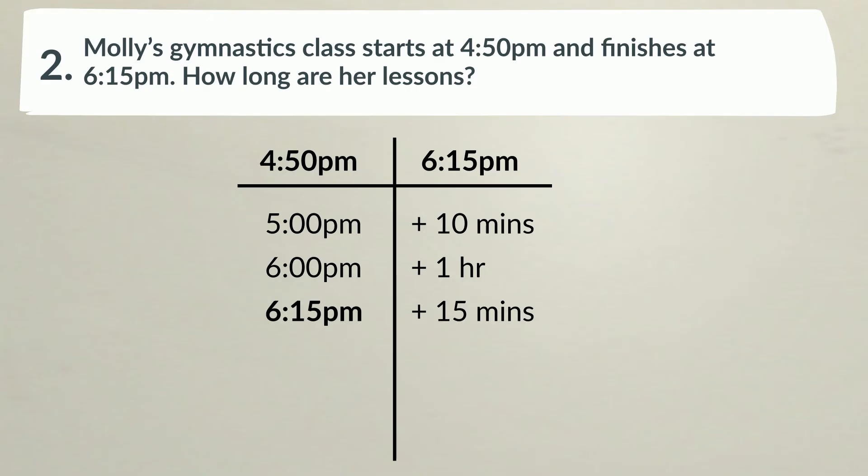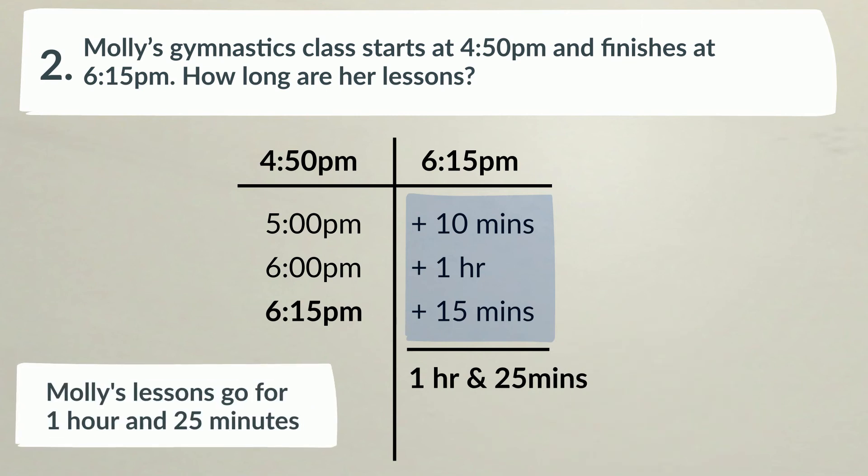To calculate how much time has elapsed from 4:50pm to 6:15pm, we just need to find the total of the time we've added. 10 minutes plus 1 hour plus 15 minutes equals 1 hour and 25 minutes. Molly's lessons go for 1 hour and 25 minutes.